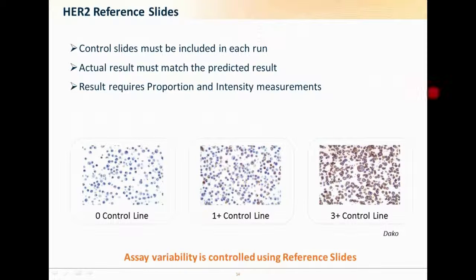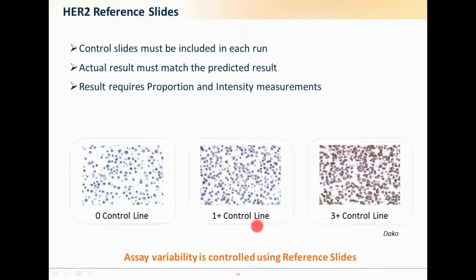What has been achieved to standardize HER2 testing is the introduction of control slides. If you're running an IHC test, control slides must be included in every run, and the actual result must match the predicted result. If you're looking at the one-plus control cell line and you get a one-plus, that run is acceptable. If it doesn't come out as one-plus, you need to discard the data from that run and repeat it, perhaps using a new kit or antibody. Results require both proportion and intensity measurements. By bringing in the reference slide, we've been able to standardize how HER2 testing is being applied.